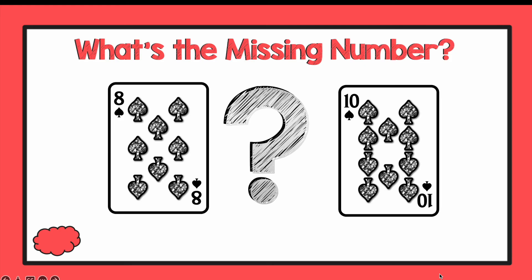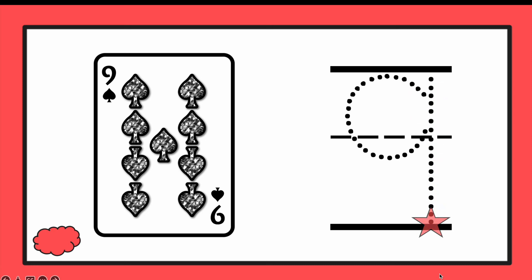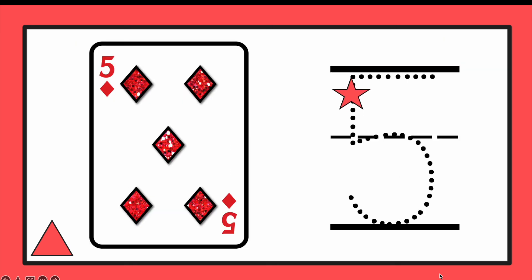Now, what is the missing number? 5. Nice job. Write your answer next to the cloud. The missing number was the number 9. What's the missing number? 5. Nice job. It can be a little bit tricky to write a 5, so try and make it face the right way.